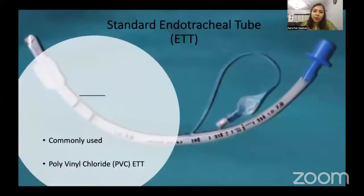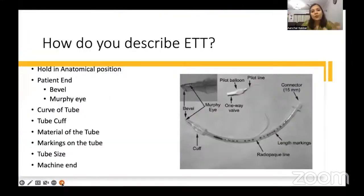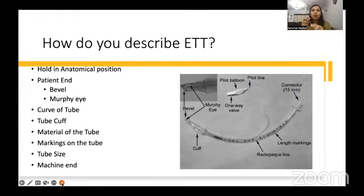The standard endotracheal tube is the most commonly used one. It is made up of polyvinyl chloride — PVC — ET endotracheal tube. When describing the parts of the PVC tube, always hold it in an anatomical position — the way you insert it into the patient's mouth or trachea. There is a small mnemonic: ABCDE, and you start from either end.